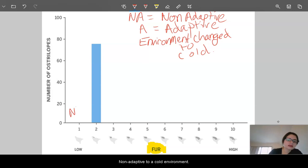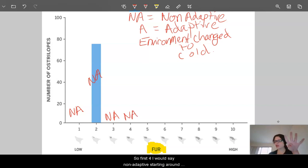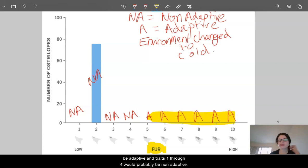Trait number two, kind of similar, actually, because there's also a low fur amount. And I'd say the same for trait three. And we get to trait four kind of starting to enter adaptive land, but not too adaptive. So, the first four, I would say non-adaptive. Starting around five, maybe a little adaptive. And six would be a bit more. And so on. So, my prediction is, if the environment changed to cold, these traits going from about five to ten would probably be adaptive. And traits one through four would probably be non-adaptive.